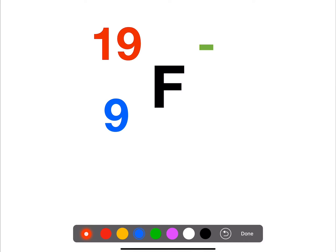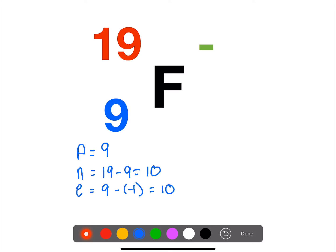And here's one with a negative charge. Protons — same as the atomic number. Neutrons is mass minus atomic. And electrons is atomic minus the charge. In this case we have a negative charge so that adds on — we have gained one electron so we now have 10.